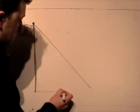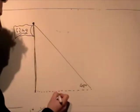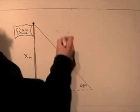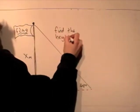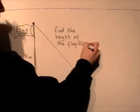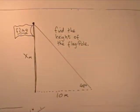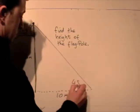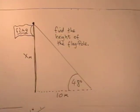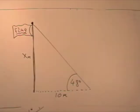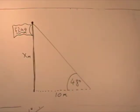Here we have a flagpole and the angle of elevation is 48 degrees. The bottom of the line from the flagpole is 10 meters away from the pole, and we have to find the height of the flagpole. So 48 degrees, here we go.